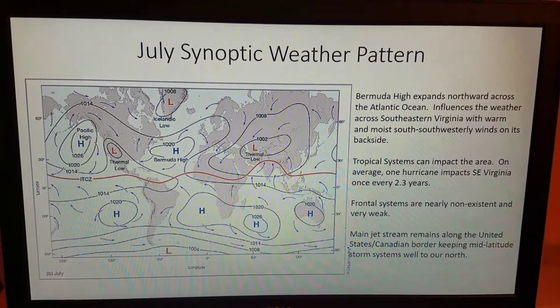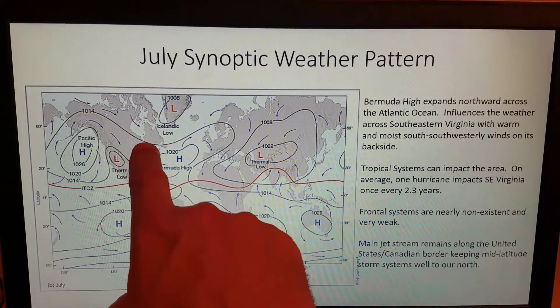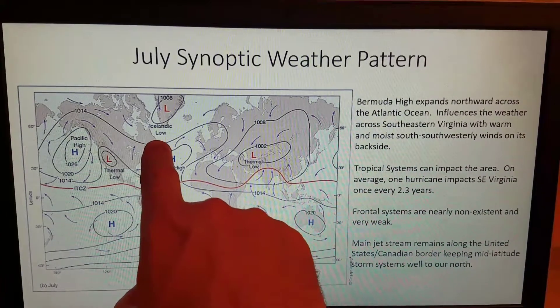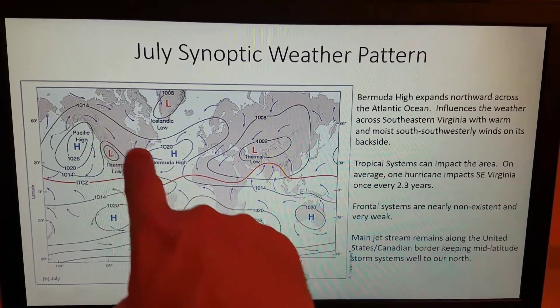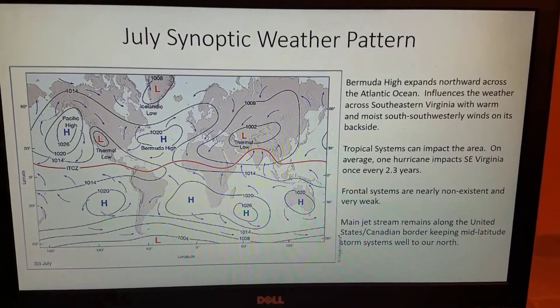Frontal systems are nearly nonexistent and very weak as the main jet stream resides over the northern United States along the U.S.-Canadian border so there's really no push from the upper level jet stream winds of any frontal systems to push through the area.